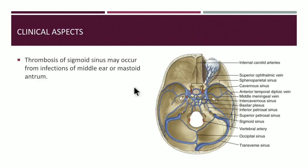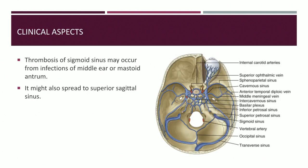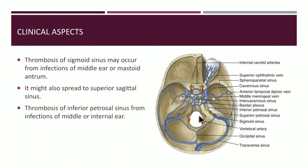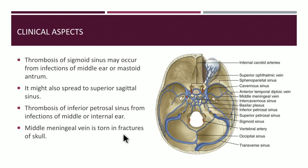In summary, clinically: sigmoid sinus thrombosis may arise from middle ear or mastoid antrum infections due to the thin intervening bone; this may spread to the superior sagittal sinus. Inferior petrosal sinus thrombosis from internal and middle ear infections can spread to the cavernous sinus. Middle meningeal veins torn in skull fractures are responsible for producing epidural hematoma. That concludes the discussion of dural folds and dural venous sinuses. Thank you for your patient listening.